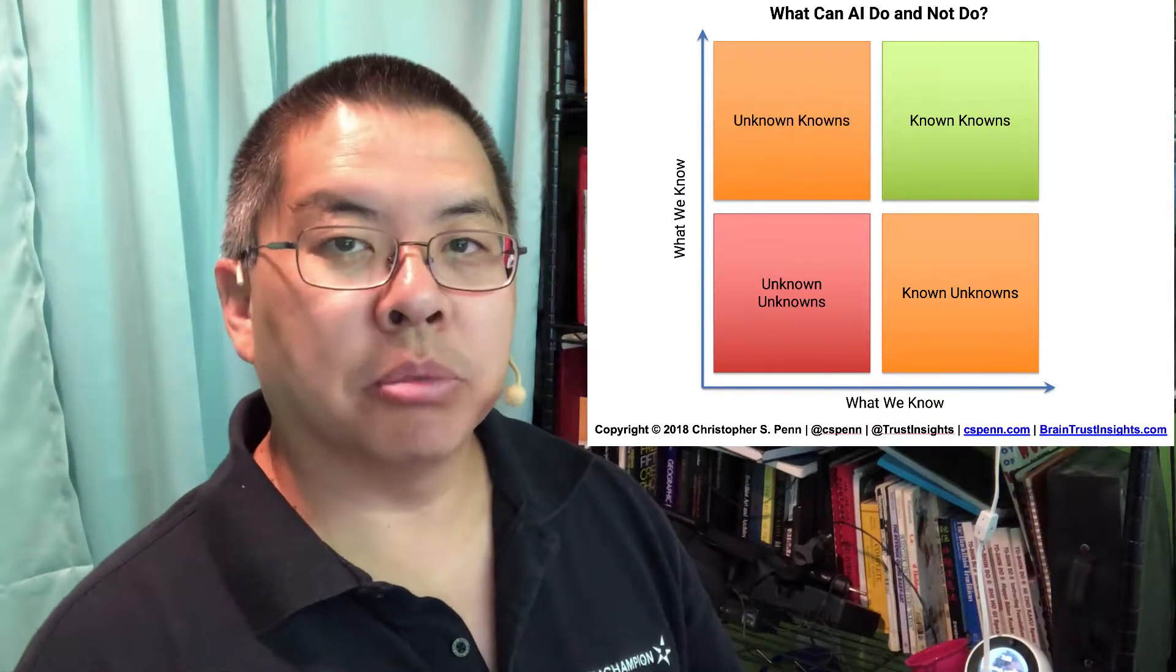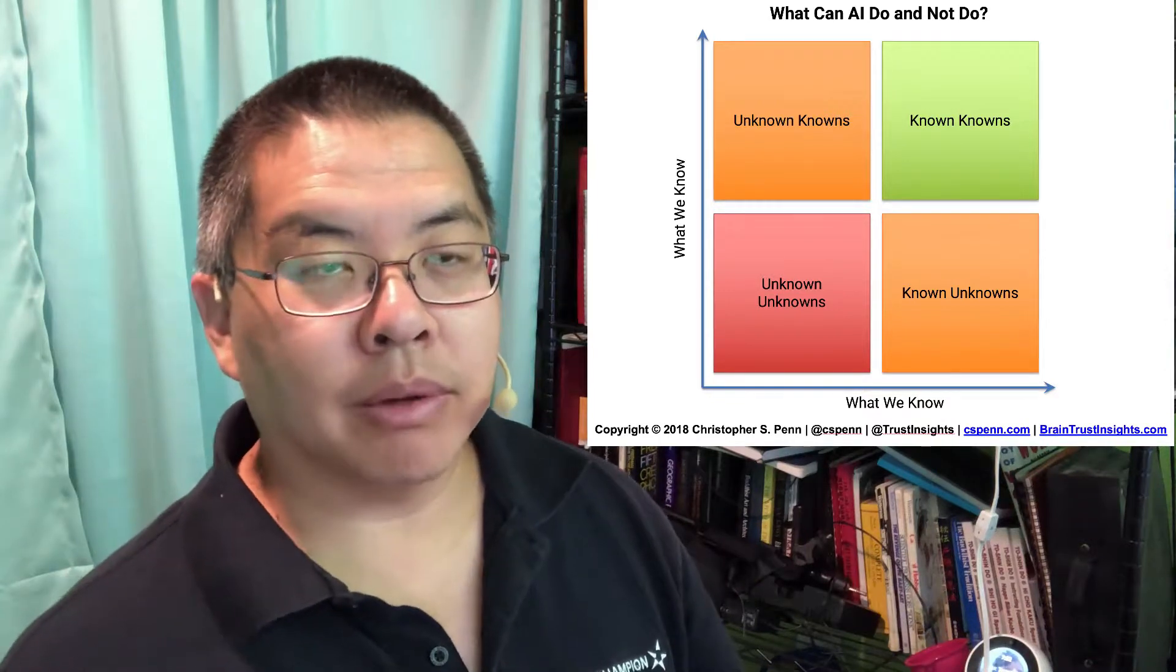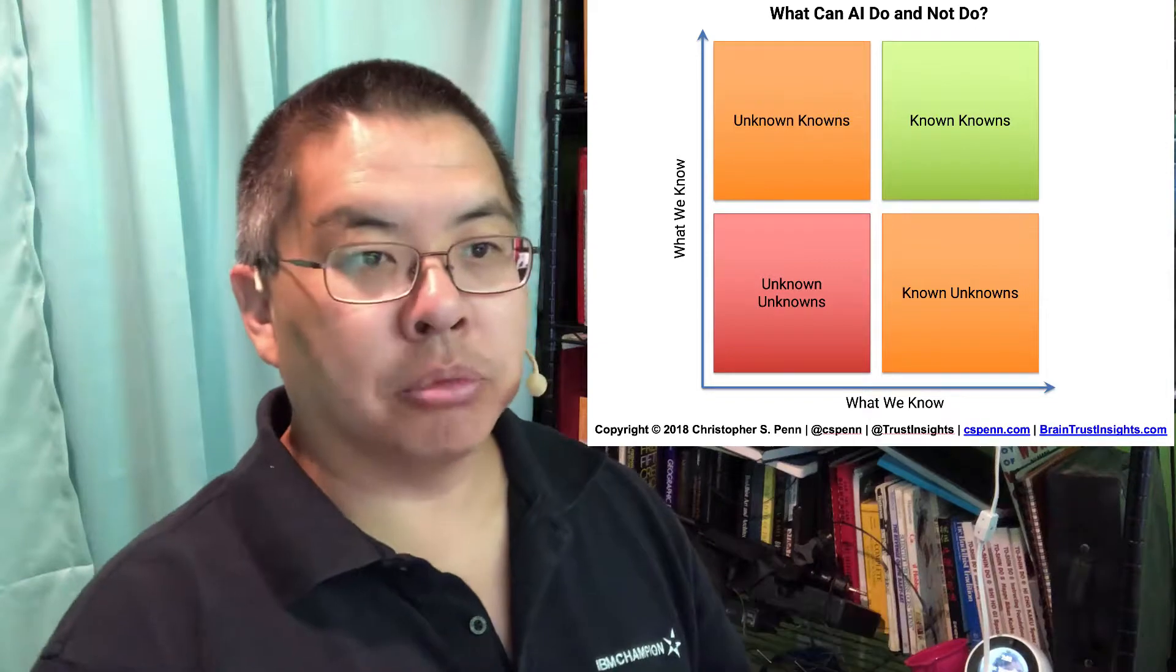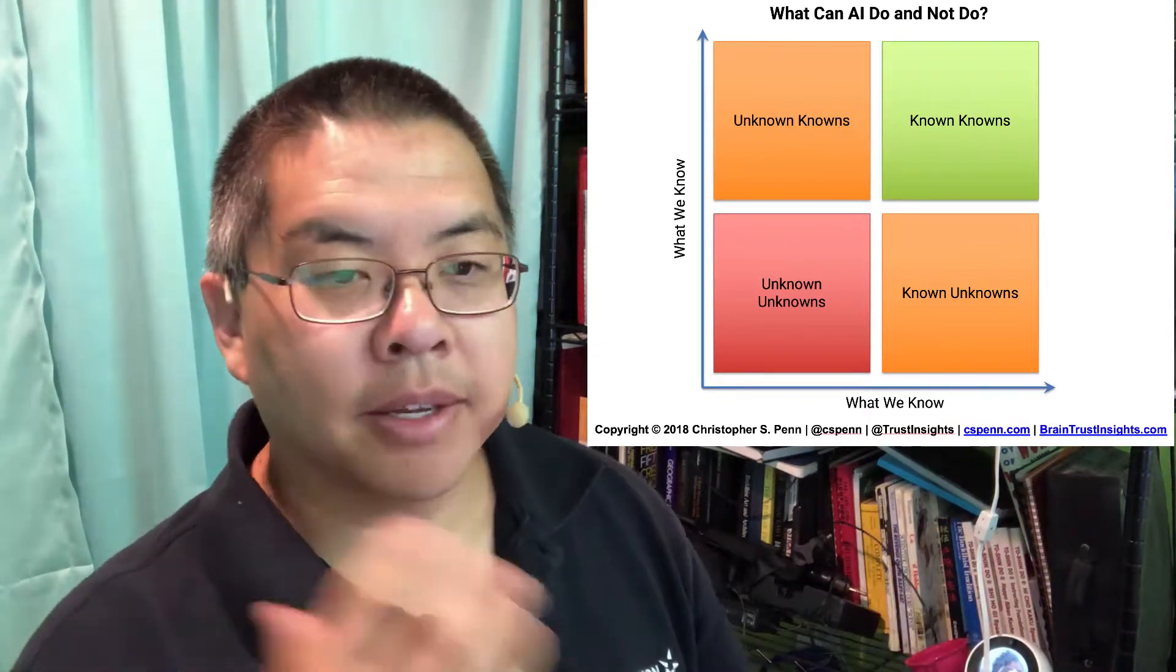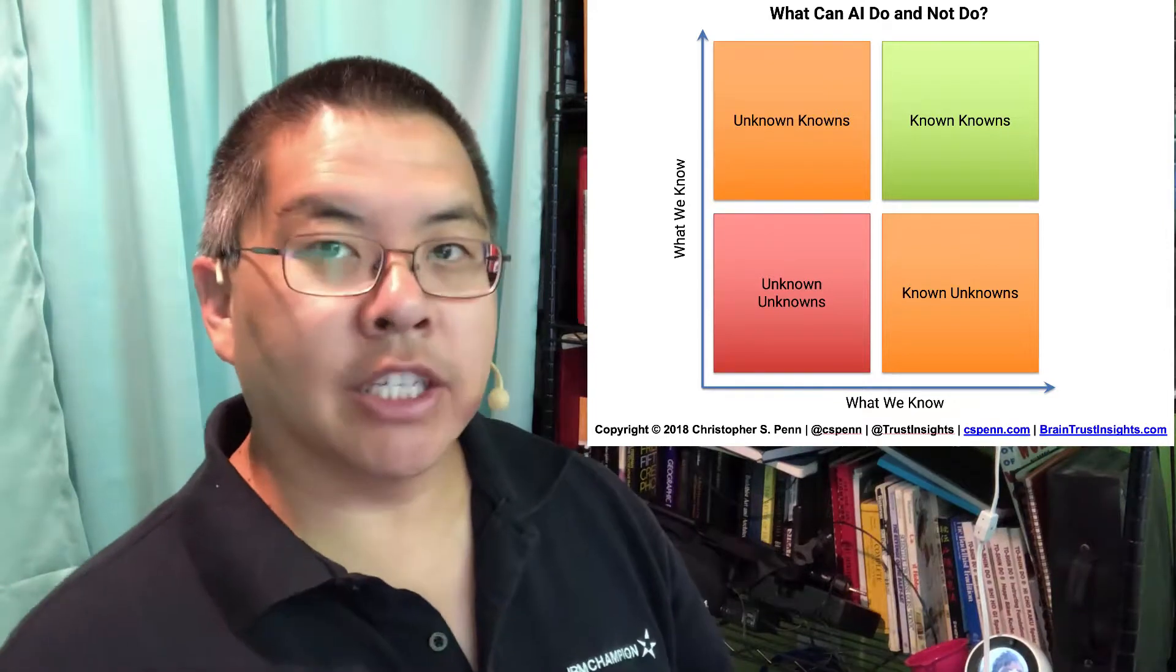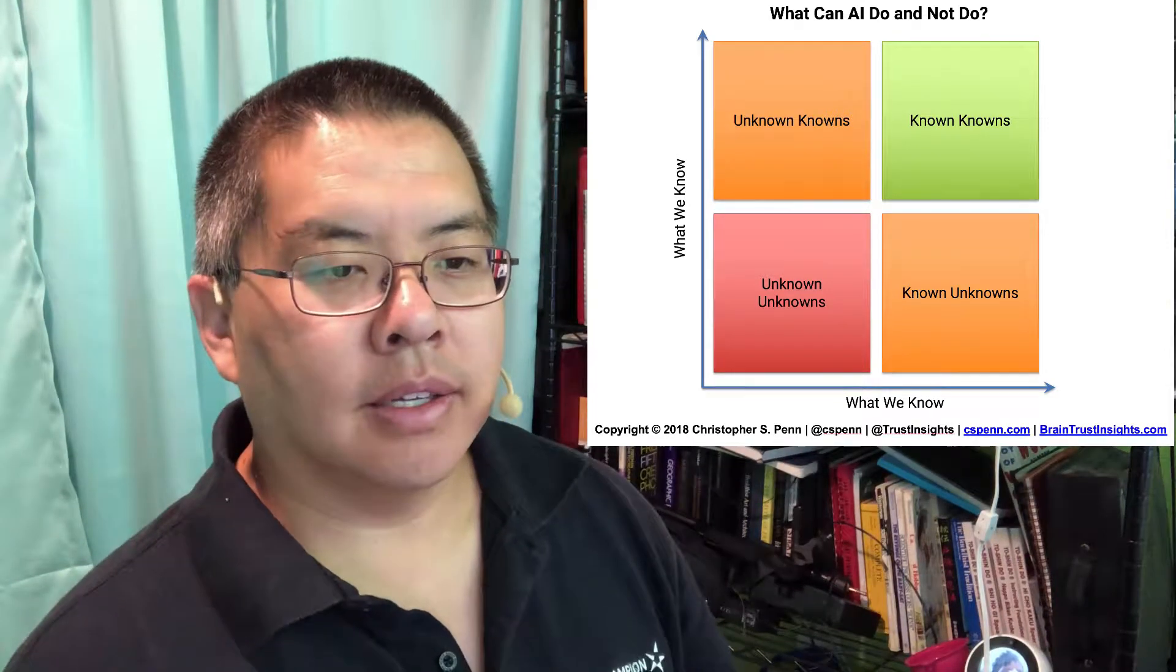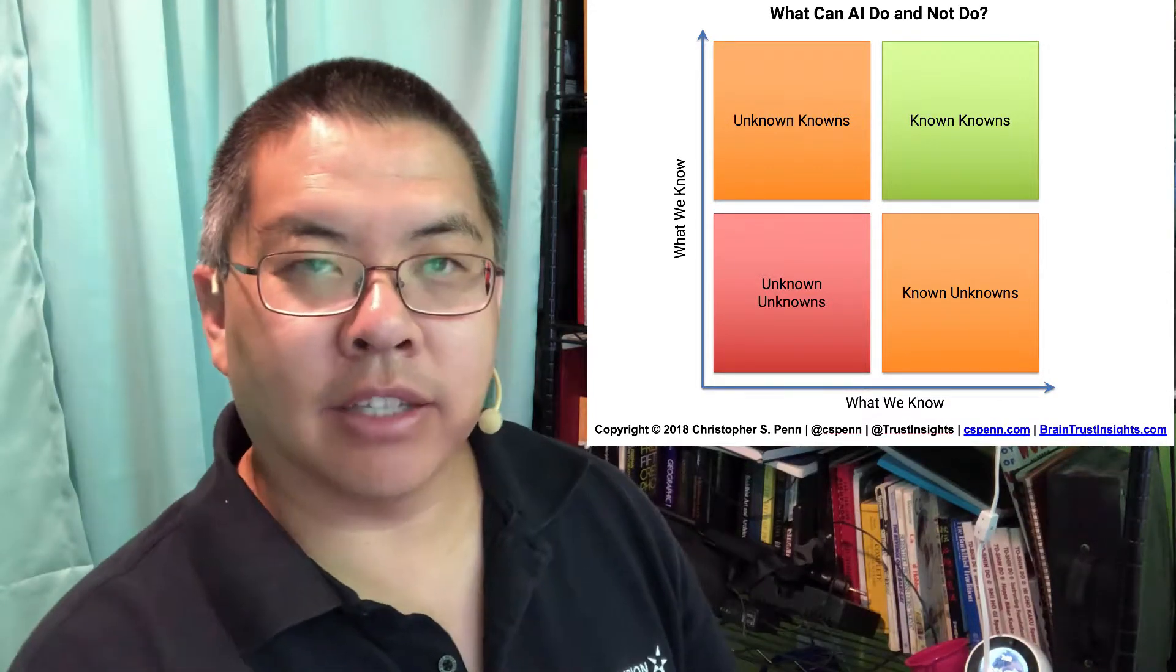So think about it from those perspectives of the four categories we're talking about. You know the destination, you know the route. You know the destination but you don't know the route. You know all the routes but not the destination. Or you don't know either the destination or the lay of the land. Of those categories, AI is great at improving what you know and is terrible right now at trying to solve for things that you don't know.